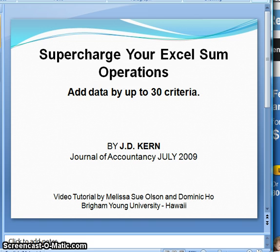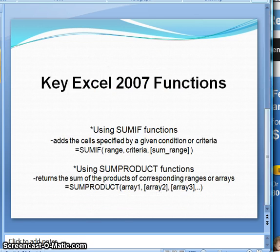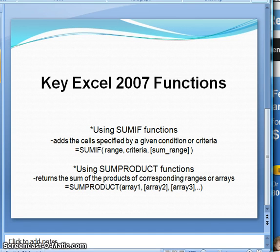The main functions we're going to go over are SUMIF and SUMPRODUCT. Using the SUMIF function, you're able to add the cells that you specify under a given condition. The three things you need are the range, the criteria, and then the sum range.